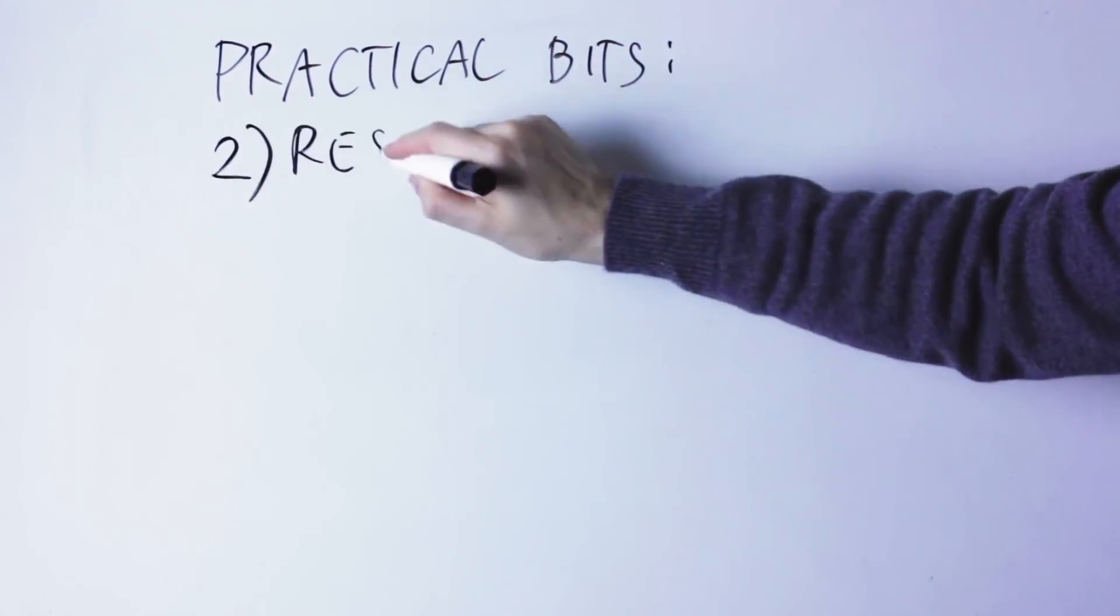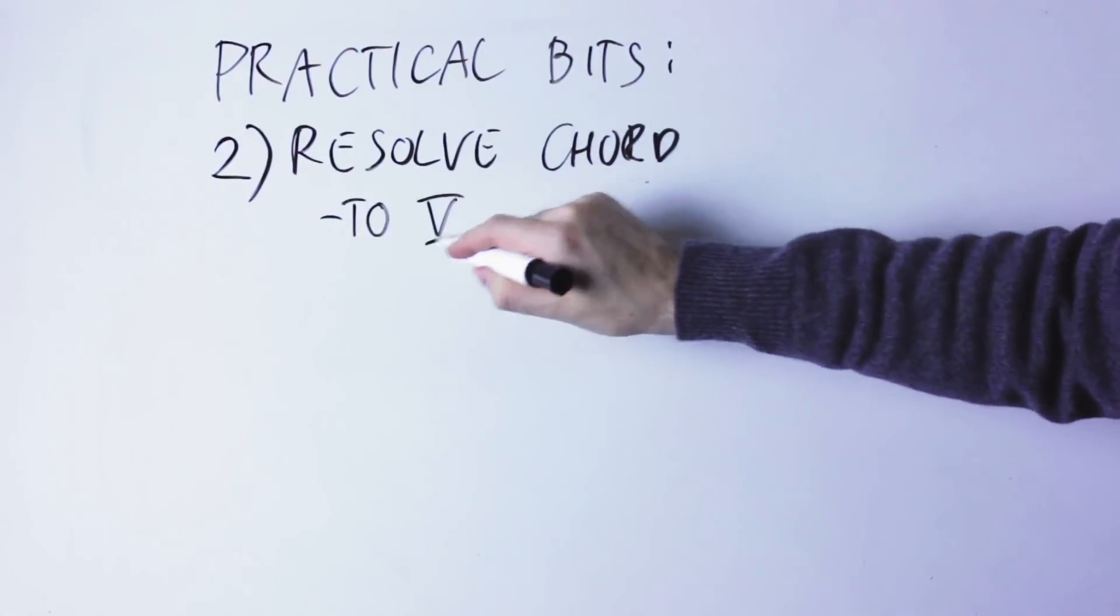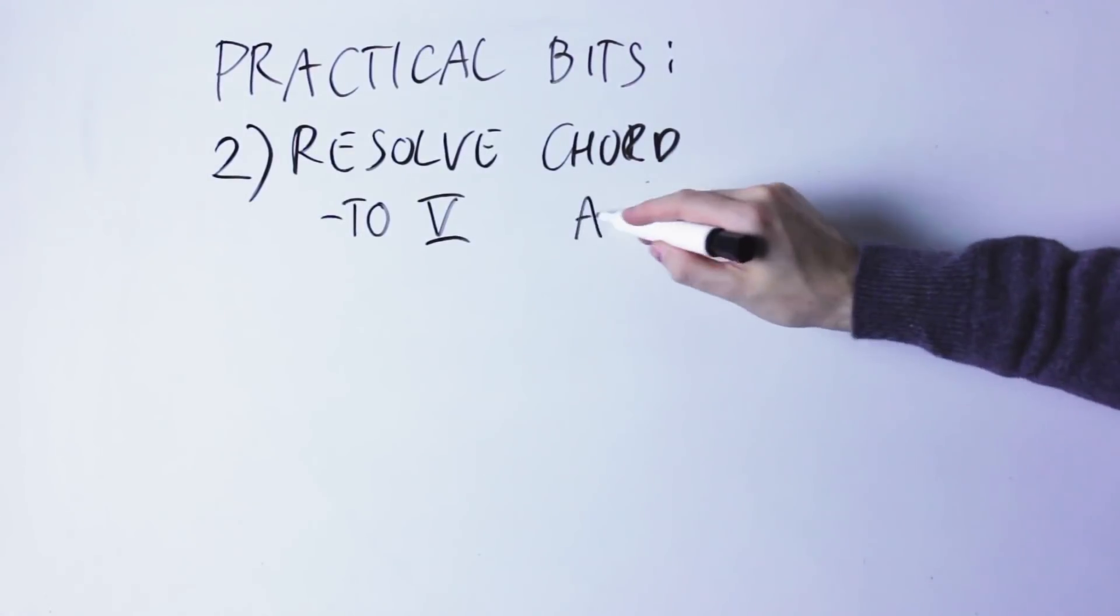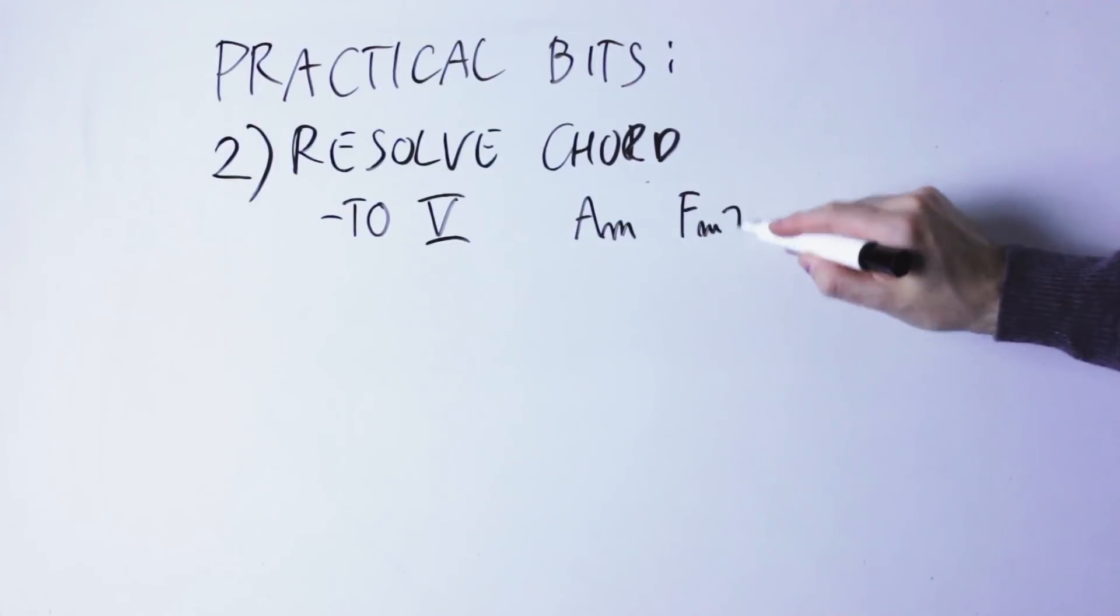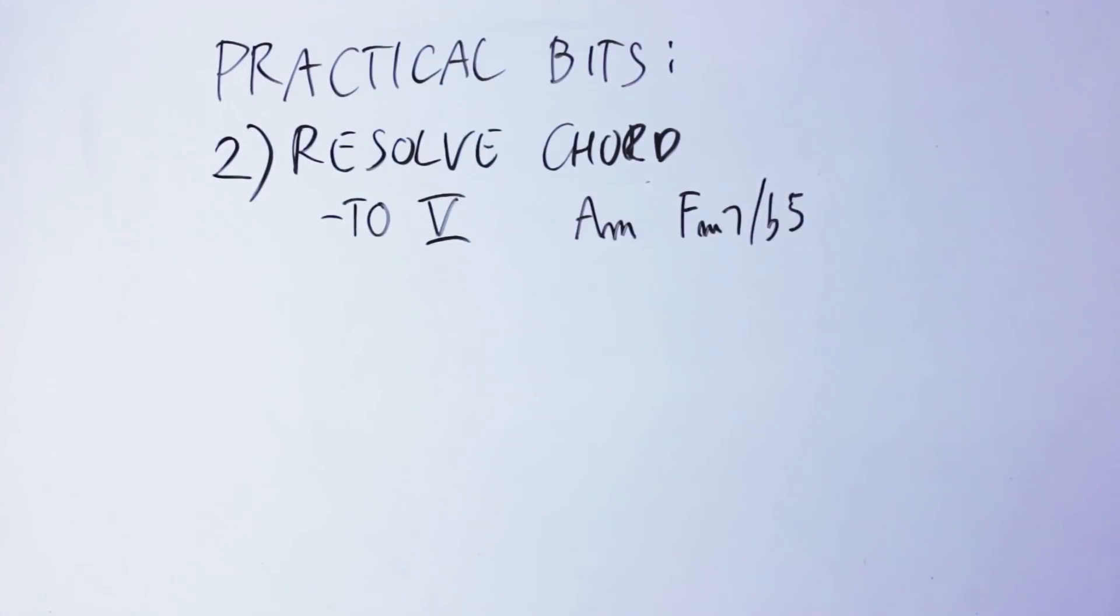Then you can resolve this chord in two different ways. You can resolve the Tristan chord, like Wagner does, to the fifth chord of the key. So in this case, you'll play F minor 7 flat 5 into E or E7.